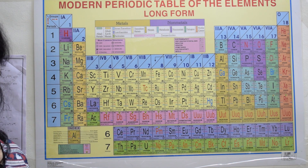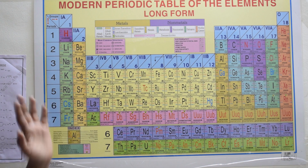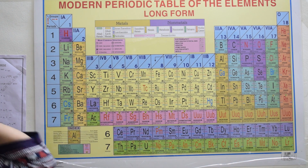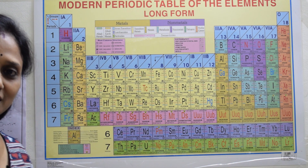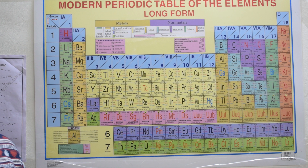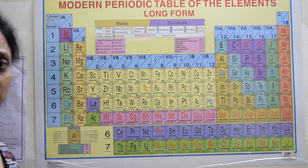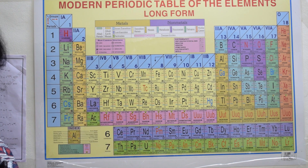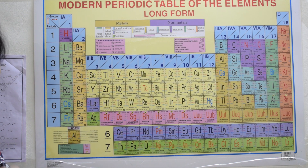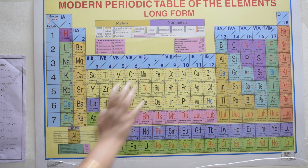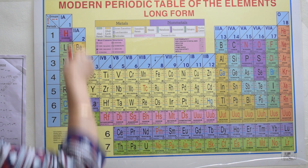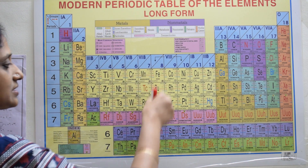Now, what did Moseley discover? In the modern periodic table, this chart is very important for you, especially in chemistry. According to the modern periodic table, there are two important concepts most students get confused about. The first key terms you should remember are 'vertical' and 'horizontal.'